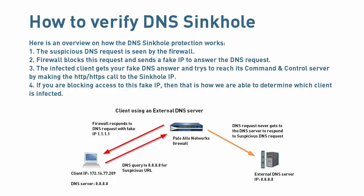Inside the threat logs, you should be able to see the client IP address as a source when the suspicious DNS request is made. The next step would be looking for the client attempting to access the DNS sinkhole IP of 1.1.1.1. If you have configured your firewall properly, then you should be blocking all access, or at a minimum, service port 80 for HTTP or port 443 for HTTPS.